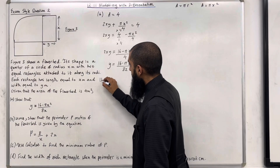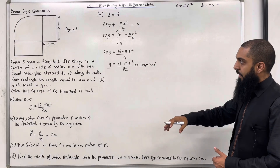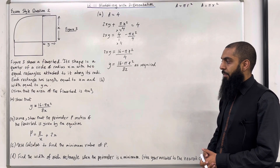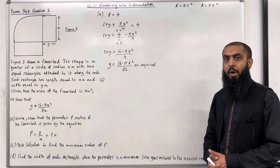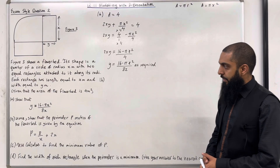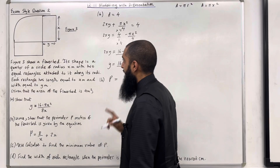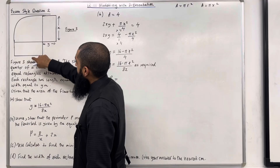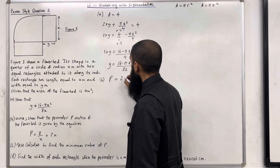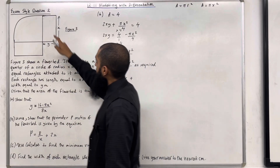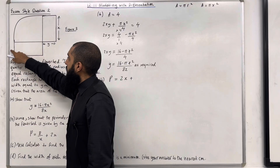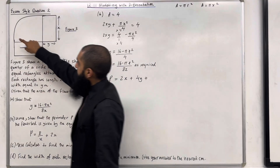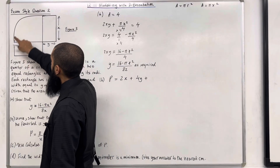Let's move on to Part B. It says 'hence', so we refer back to our answer from Part A. Show that the perimeter P metres of the flower bed is given by P equals 8 over x plus 2x. The perimeter P is the distance around the outside of the flower bed. So we have x plus x, which is 2x, plus y plus y plus y plus y, which is 4y, plus the curved arc.